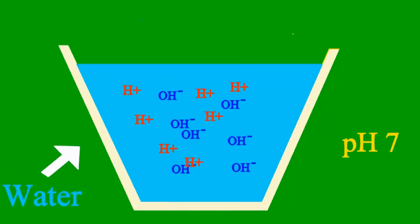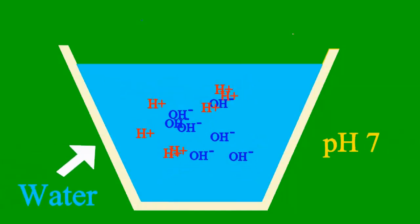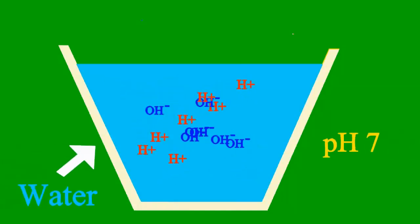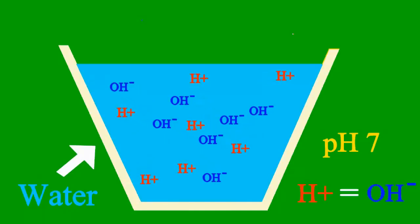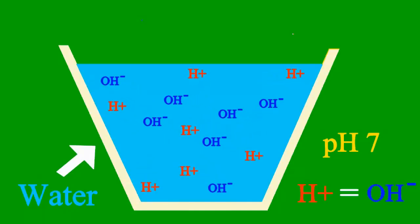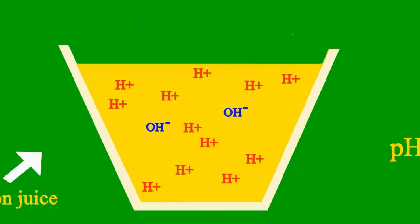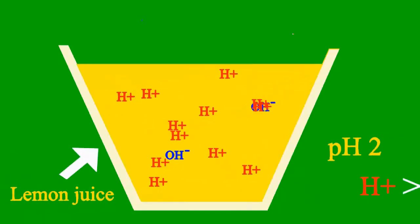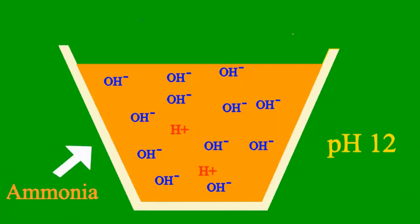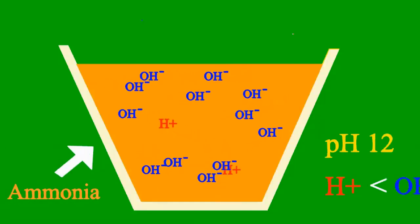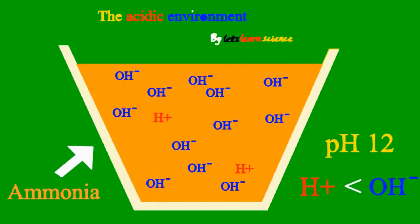When the pH is 7, it's a case where the sample is neither an acid nor a base. But less than 7, it's an acid. More than 7, it's a base all the way.